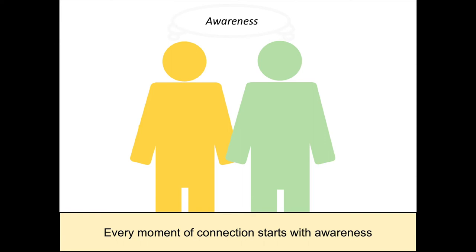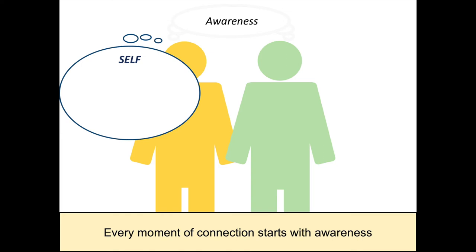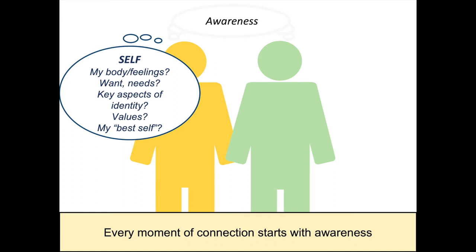The last piece of the model to describe is the awareness piece. Every moment of connection starts with awareness. We can think of awareness from the perspective of the courageous person and from the perspective of the loving person — the kinds of awareness that are needed are the same, but the way it plays out is a little different. For the courageous person, what's most important is self-awareness: awareness of what's going on in your body and what you're feeling, since you can't show and express your feelings if you're not aware of them. Awareness of your wants and needs so you can ask for what you need. Awareness of key aspects of your identity so you know who you are and what you want in a relationship as the interaction is happening. One way to look at awareness is to think about my best self — who do I really want to be in this relationship?